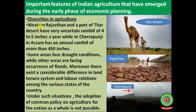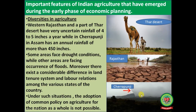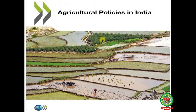Diversities in agriculture: western Rajasthan and a part of the Thar Desert have very uncertain rainfall of four to five inches a year, while Cherrapunji in Assam has annual rainfall of more than 450 inches. Some areas face drought conditions while others face floods. There also exists a considerable difference in land tenure systems and land relations among various states, making adoption of a common national agriculture policy difficult.